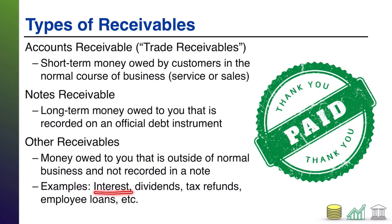So I have some examples here. Interest receivable — you loan someone money and you rack up interest as part of them owing you money. That's interest receivable. Or say you have investments and those investments pay dividends — dividend receivable. Say you're getting a refund on your taxes — taxes receivable. So forth and so on.